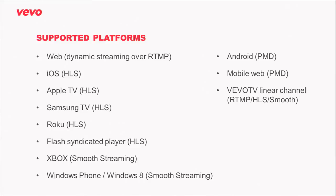Here are some of the platforms Vivo supports currently. On the web, we're doing dynamic streaming over RTMP. We're also on iOS devices, Apple TV, Samsung TV, and Roku — all using HLS delivery. We just recently, about a week and a half ago, pushed out a Flash syndicated player that is now also playing HLS over the web for our syndication partners. We also do smooth streaming on Windows platforms and Xbox. On Android, we do progressive media downloads as well as on the mobile web. We also have a 24-hour live linear video channel that is transcoded and repackaged on the fly in all three protocols — RTMP, HLS, and smooth.